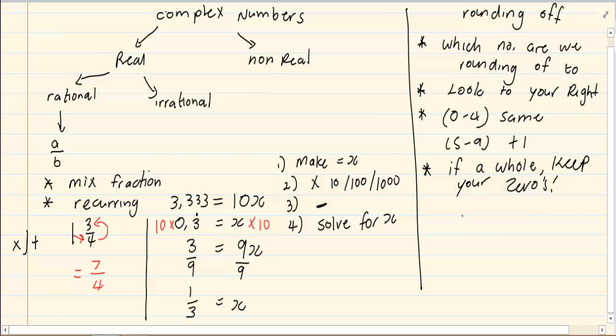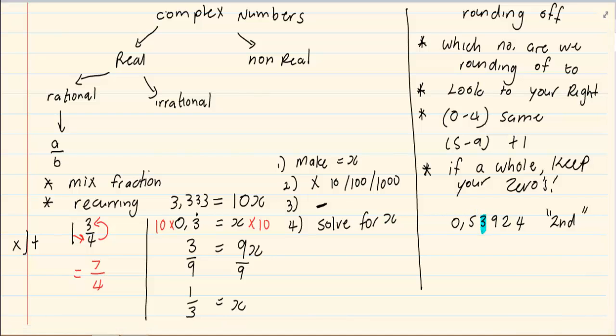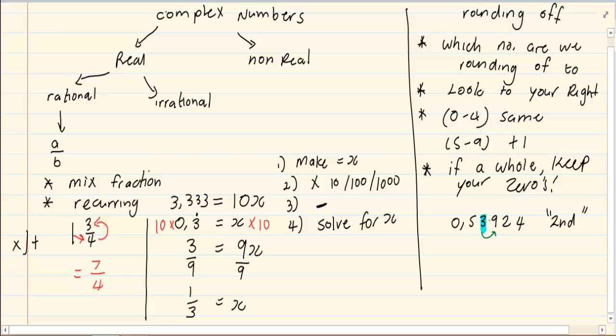For example, 0.5924, round off to the second decimal. So we are rounding off to the second decimal. Mark your second decimal. Look to the number next to it on the right hand side. It's 9.